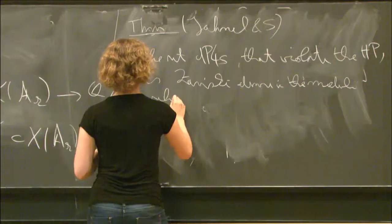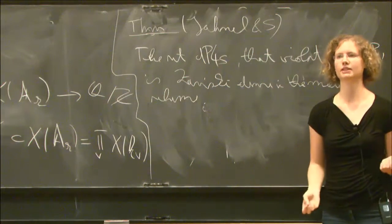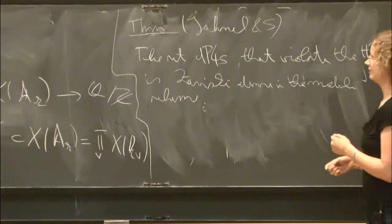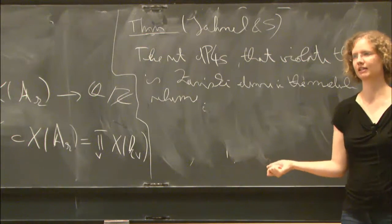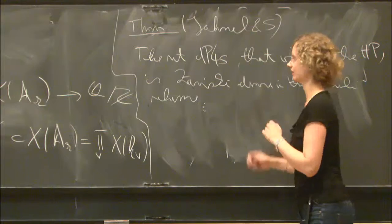If you want, you can also interpret this as a statement of saying that violating the Hasse principle is not a geometric property but an arithmetic property. Previously, we only had a one-parameter family which was conditional to Schinzel's hypothesis. We built a two-parameter family which, in fact, covers the whole moduli space, which is unconditional.